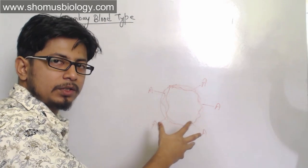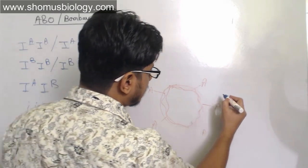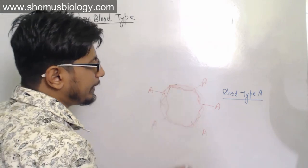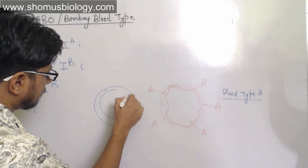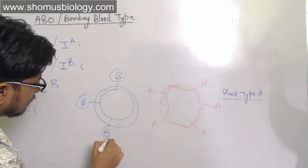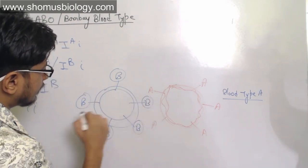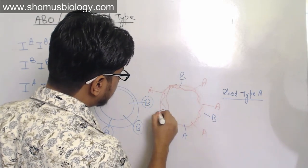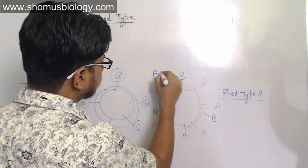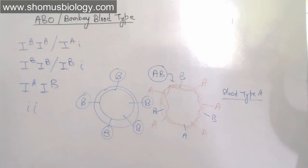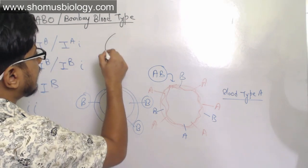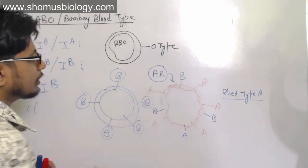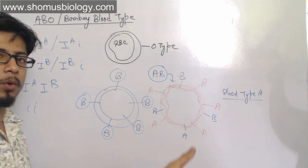If A antigen is present on the surface of the red blood cell, we call that blood type A. For blood type B, B antigen is present on the surface. If both A and B antigens are present together, we call that blood type AB. And if neither antigen is present on the red blood cell surface, we call it blood type O. This is the fundamental idea behind the ABO blood type system.